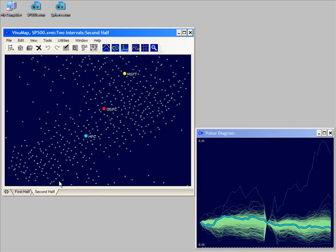The map for the second half year is quite different. Stocks performed well in the first half may change to underperforming stocks, as we can see here with these two highlighted stocks.